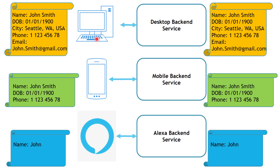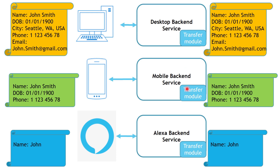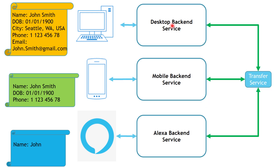Now let's say our solution wants to transfer money somewhere. We would implement a transfer module in all of our backend services. From one perspective, we have improved our solution by implementing the Backends for Frontends pattern. But from the other side, we have violated the DRY principle — Don't Repeat Yourself — by repeating the transfer module across all backend services. The right way to handle this is to pull out all those transfer modules and put them in a separate service — let's call it the transfer service — and have communications between the different backend services and the transfer service or any other common service.